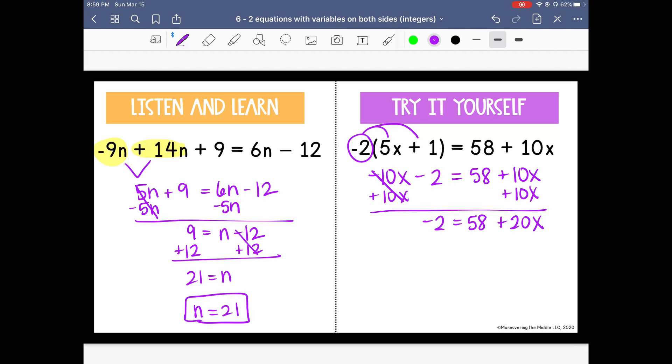To isolate the x, now we can subtract 58 from both sides. So we will have on the left negative 60 equals 20x.